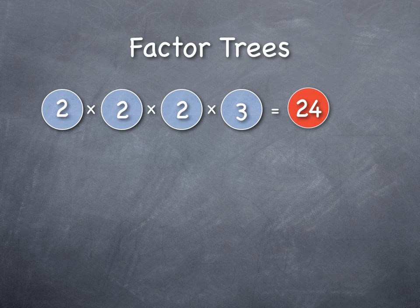2 times 2 is 4. 4 times 2 is 8. 8 times 3 is 24. So, what we say is that the number 24 can be written as the product of the prime numbers 2, 2, 2, and 3.